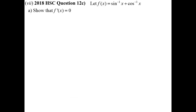Let's look at some HSC questions involving inverse functions and calculus. Starting with 2018: f(x) = inverse sine x plus inverse cos x. The first part simply says: show that the derivative is 0. Differentiating inverse sine x gives 1 over the square root of 1 minus x squared. Differentiating inverse cos x gives minus 1 over the square root of 1 minus x squared. So yes, the derivative equals 0.